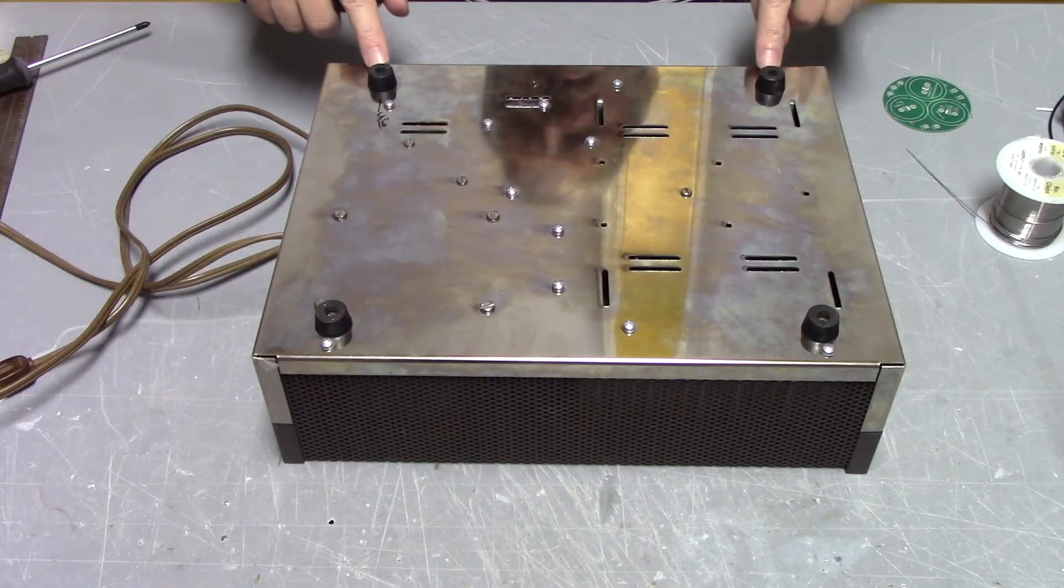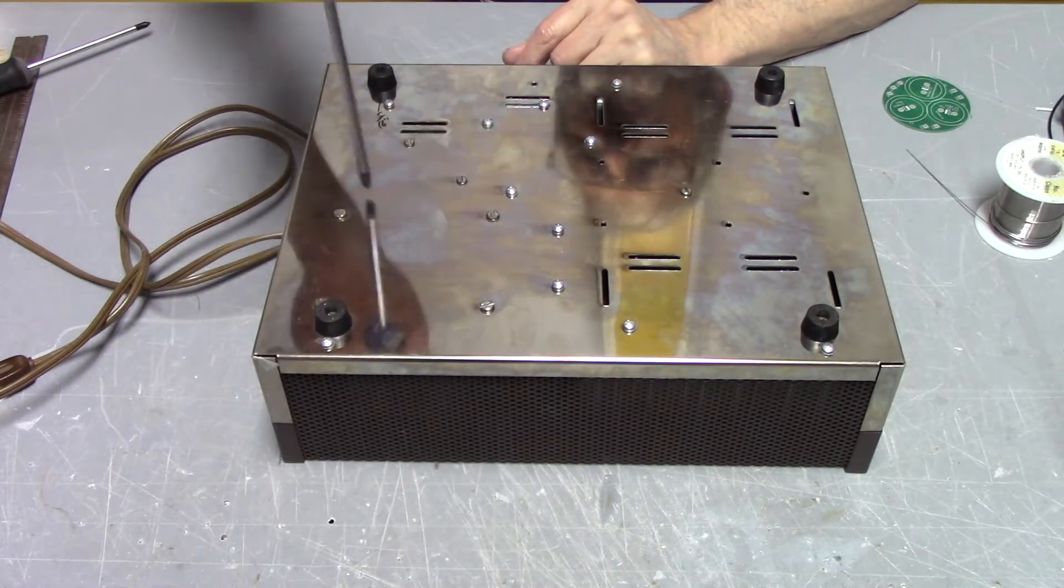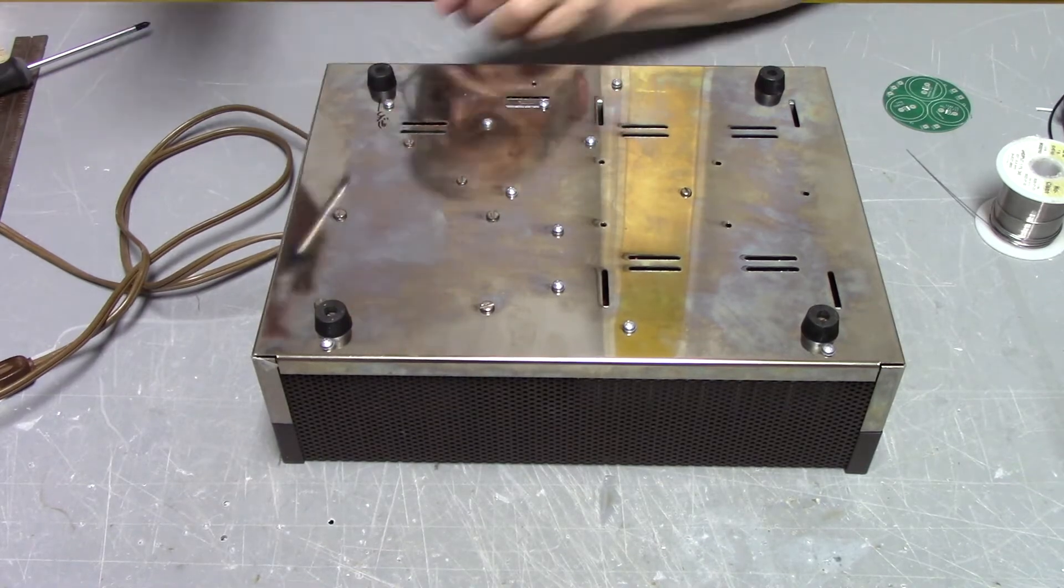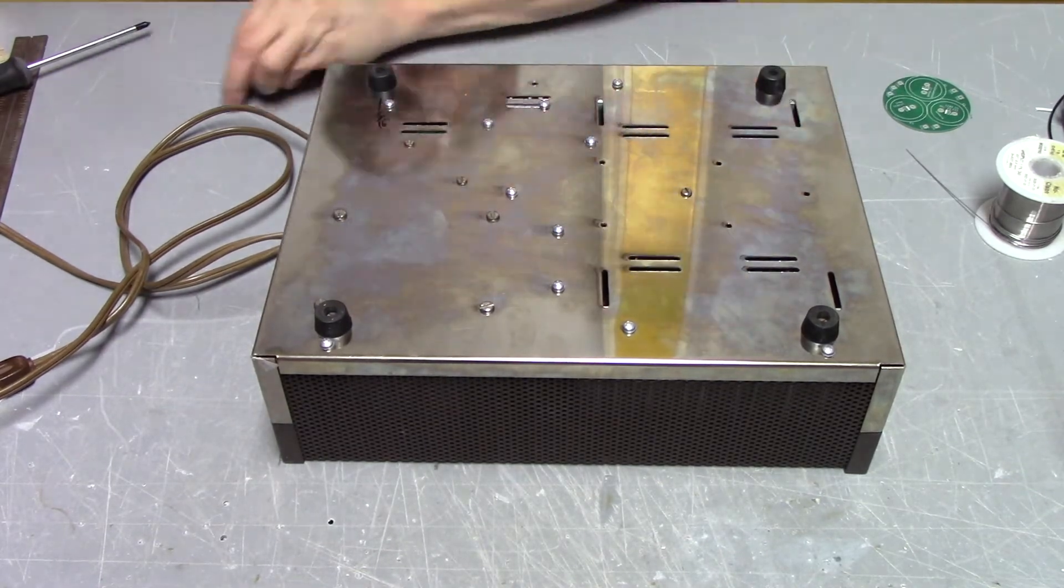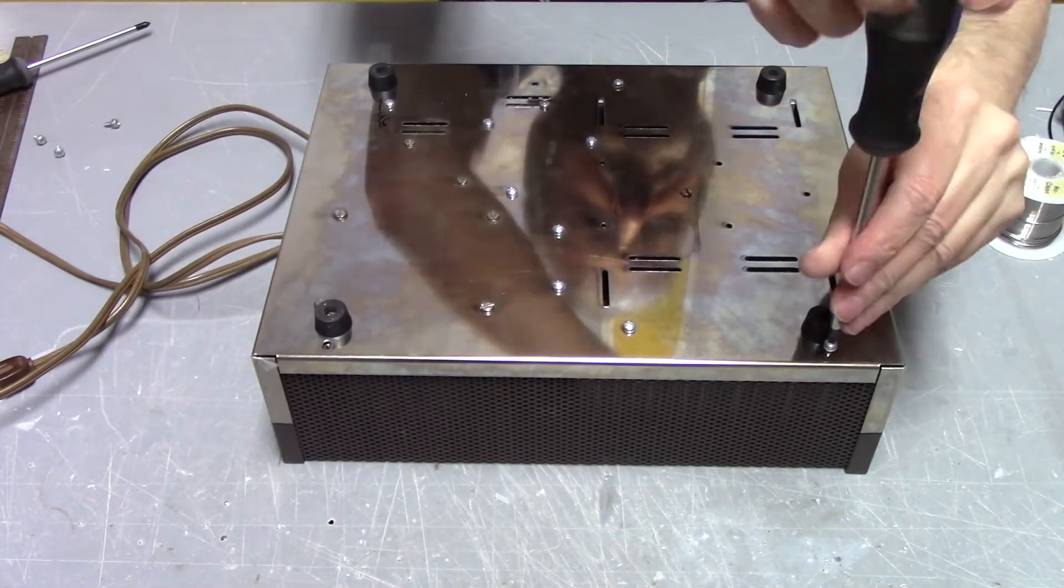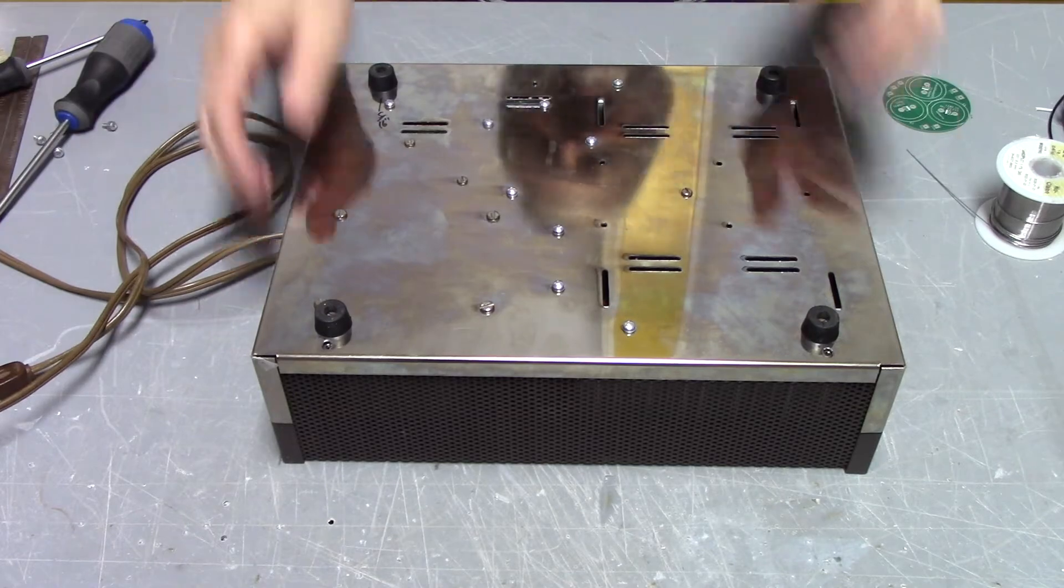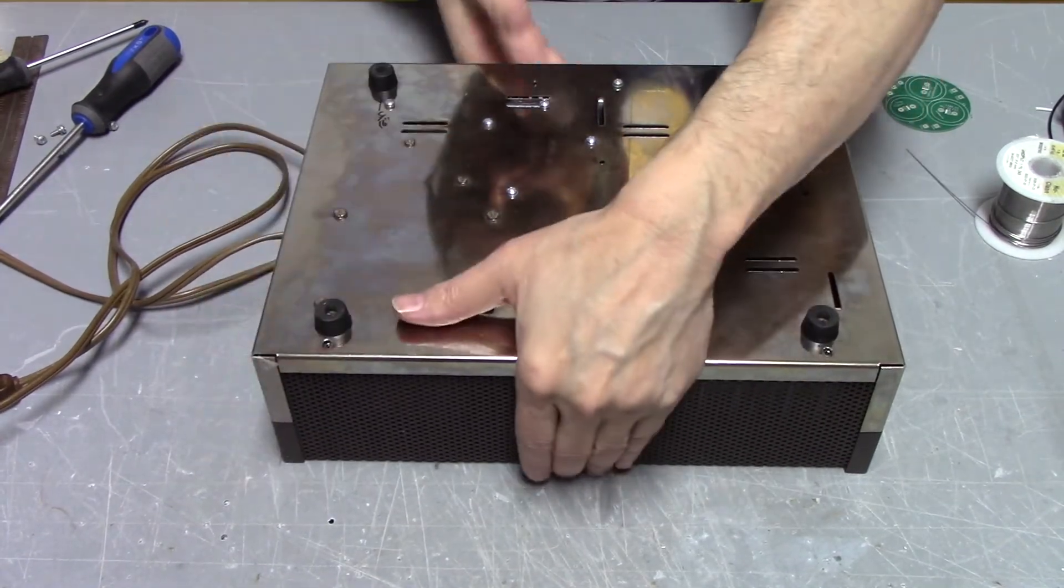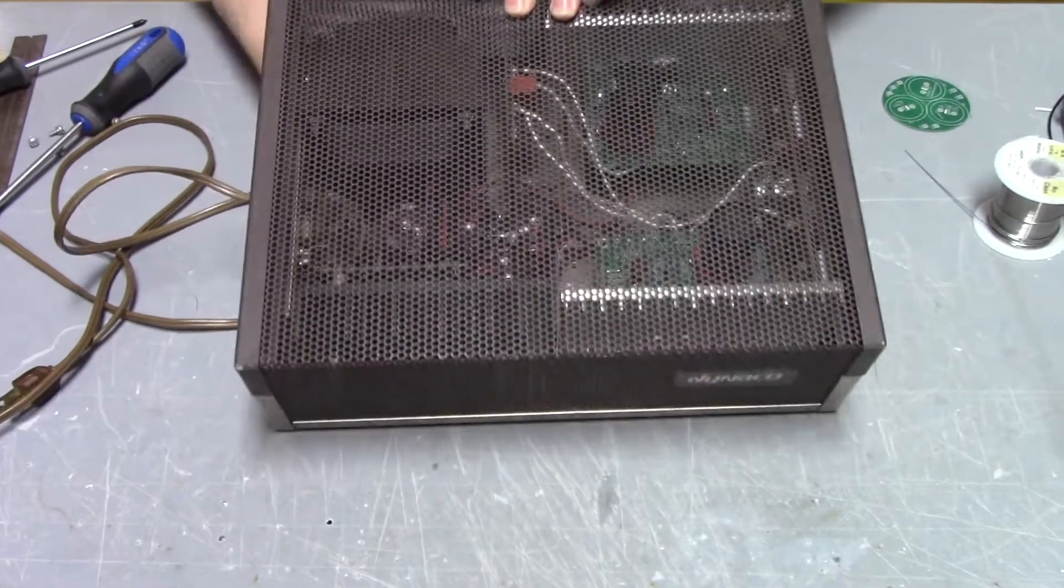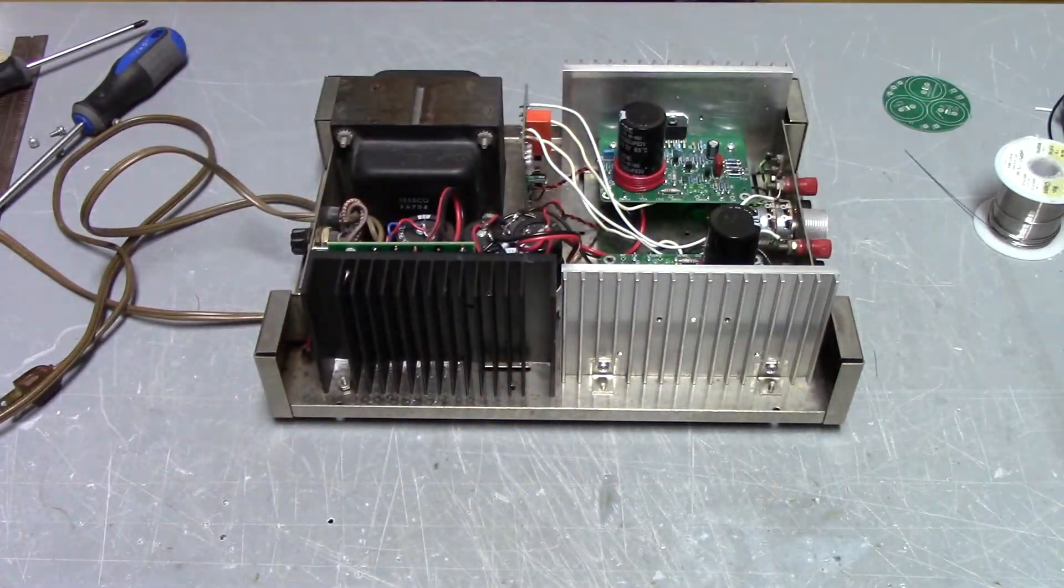We'll start by removing the four screws that hold the perforated metal cover onto the chassis bottom. Once the four screws are removed, we grab the top and the bottom together, flip it over, and lift off the perforated metal chassis.